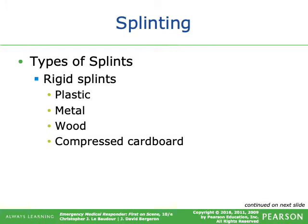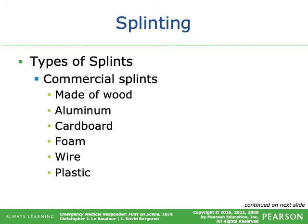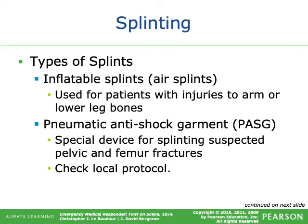Rigid splints can be made of plastic, metal, wood, or compressed cardboard. Commercial splints are generally made of wood, aluminum, cardboard, foam, wire, or plastic. Inflatable splints — also known as air splints — are used for injuries to the arm or lower leg bones. The pneumatic anti-shock garment, or PASG, is a special device used for splinting suspected pelvic and femur fractures — check local protocol, as these are not commonly used anymore but remain in the national scope of practice. Improvised splints may be soft or rigid and can be made from any material that will immobilize the extremity.